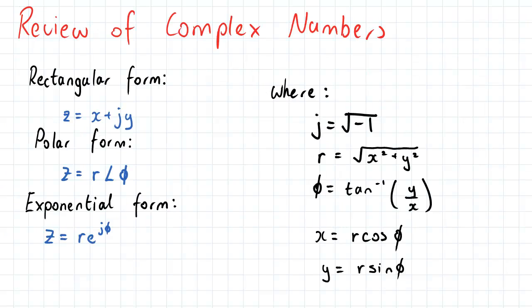So in order to understand our phasors, we need to do a quick review of our complex numbers. Recall that complex numbers can be expressed in three major forms, the first being the rectangular form, or the Cartesian form, where z, the complex number, is equal to x plus jy, with x being the real component, and y being the imaginary component of the complex number.